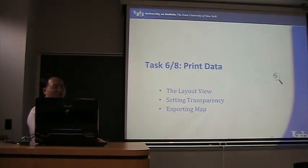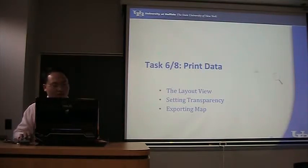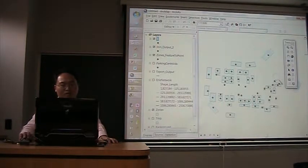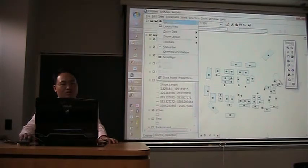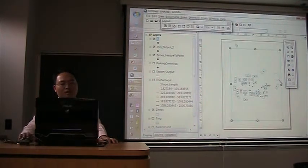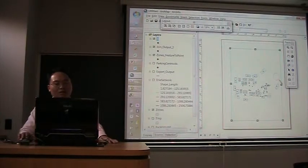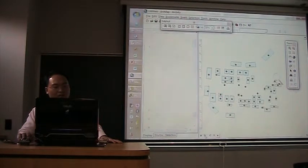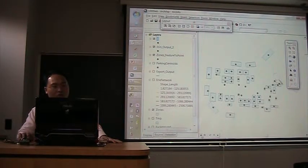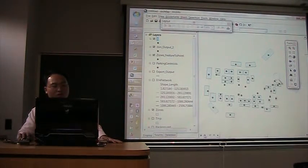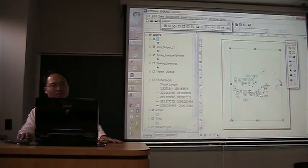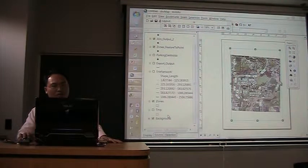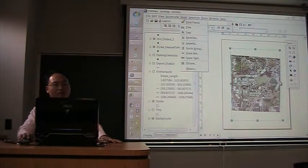The sixth task is about print data. This is a view called a data view. If you go to view and layout view, you are going to see how it's printed on a paper. You can also do it by a button here. You can switch to data view or layout view. So they are different. And you may want to add a background. You can insert a lot of things here like a needle line.